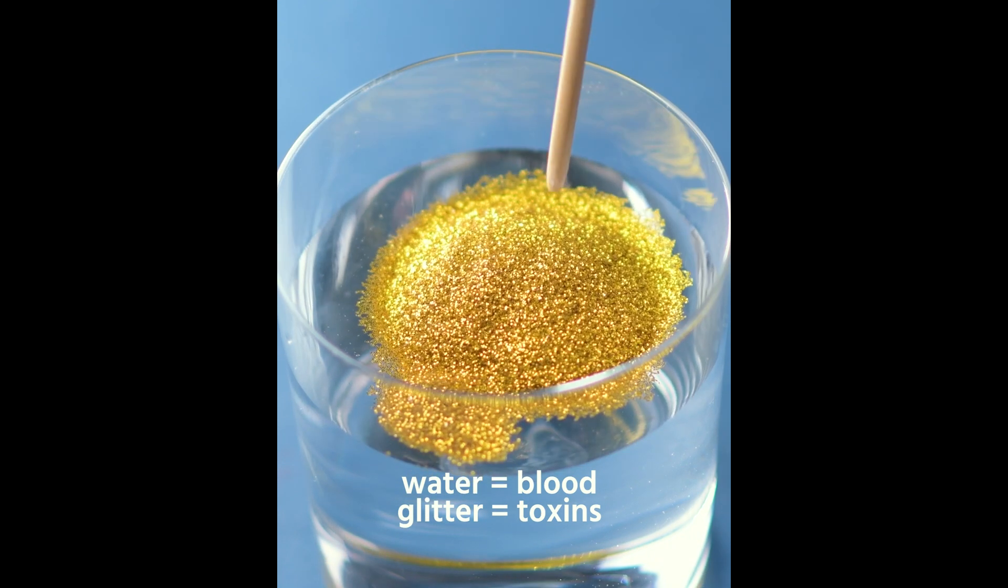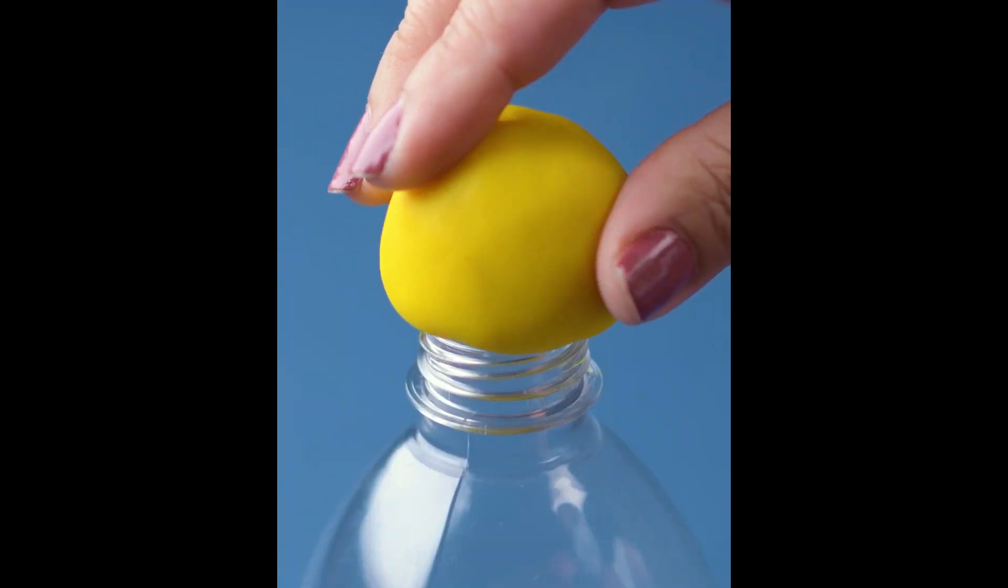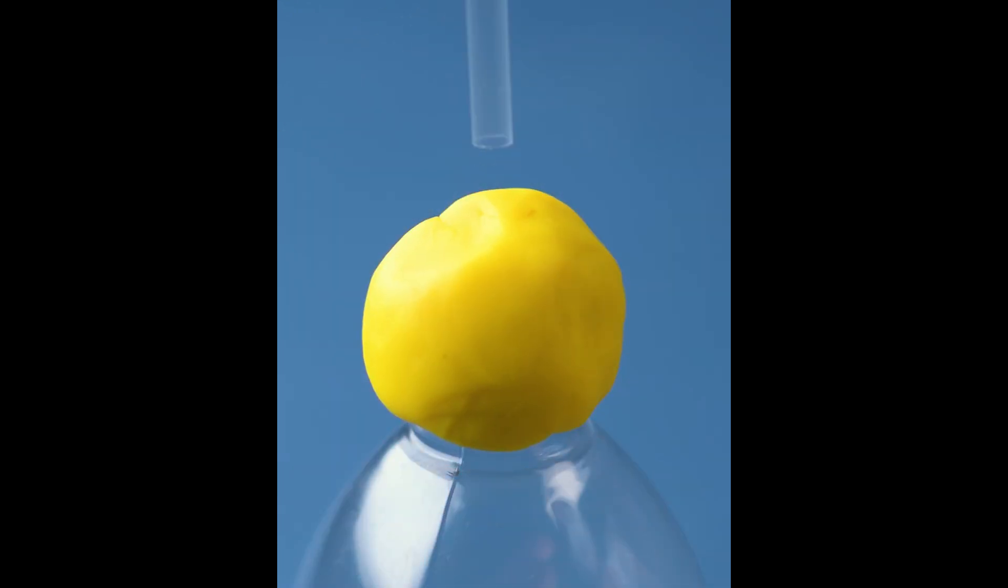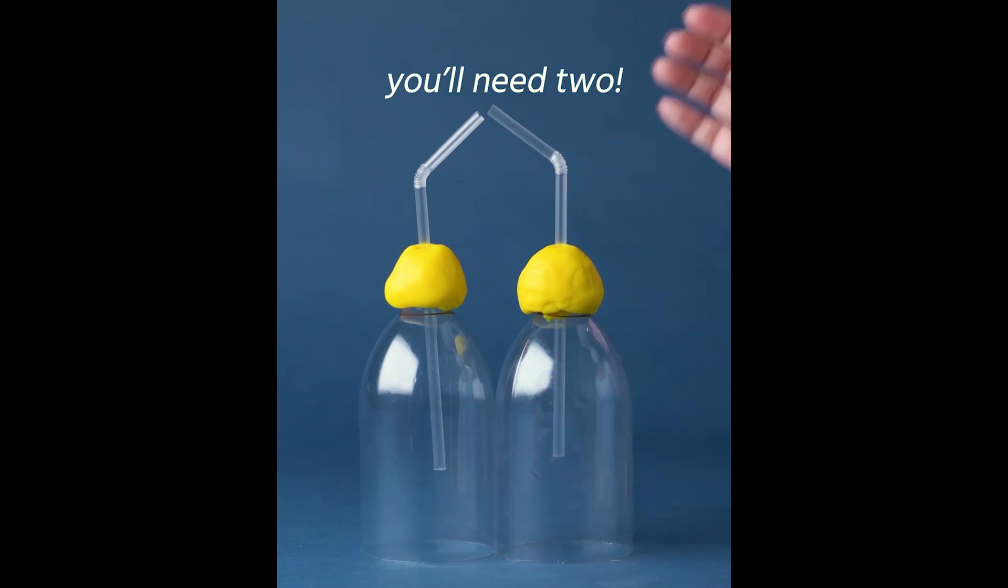Let's learn about the urinary tract. Mix glitter with water. The water represents the blood and the glitter is the toxins in our body. Set aside. Add molding clay to a cut bottle. Then insert bendy straw. Repeat step. These are your kidneys.